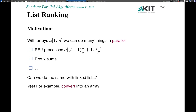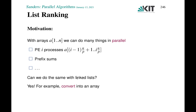But what about linked lists? Mathematically, they are very similar — they represent a sequence of elements. But accessing these elements is inherently sequential, at least if we have only the information given by the links. Linked lists are more flexible, and we will see now that under certain circumstances we can do everything with linked lists that we can do with arrays — in particular we can convert them into arrays in parallel, or another view is we can compute prefix sums on them in parallel.